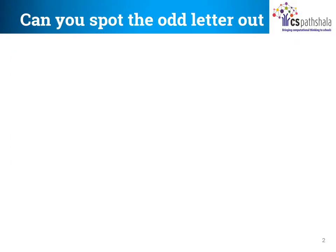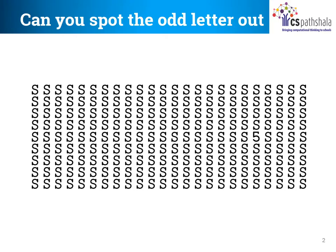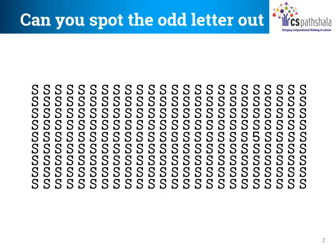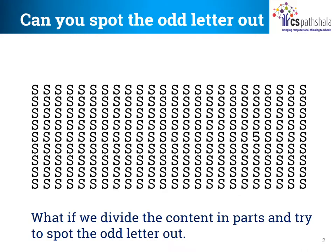Here is the first example. Can you spot the odd letter out? As you can see, there are many letter S in the picture but there is an odd letter other than S too. It does seem hard at first to spot this in one go. Our big problem here is to spot the odd letter out of a big picture. What if we can divide this problem into smaller tasks? What if we divide the content of the picture and try to spot the odd letter in each part?